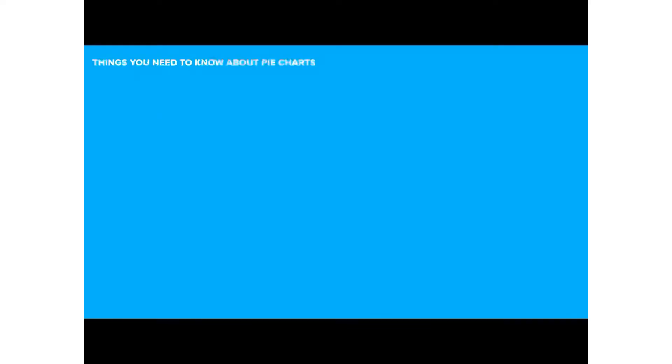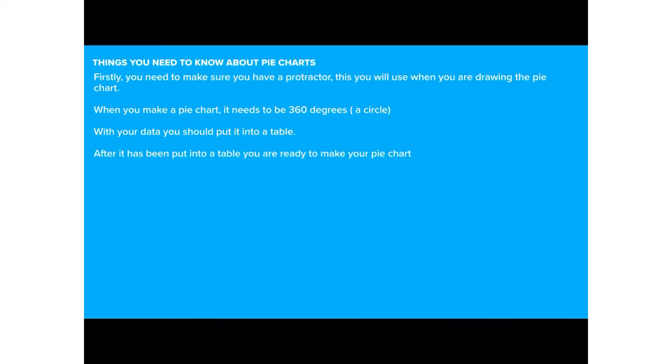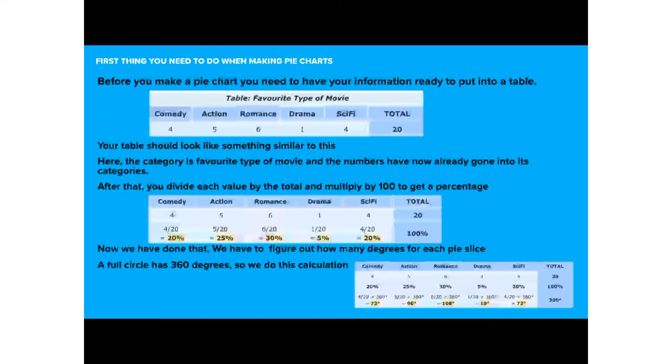Okay, so let's run through some things that we need to know about pie charts. Firstly, you need to make sure you have a protractor, which you will use when drawing the pie chart. When you make your pie chart, it needs to be 360 degrees, a circle, and your data should be put into a table before you draw it. After it's been put into a table, you're ready to make your pie chart.